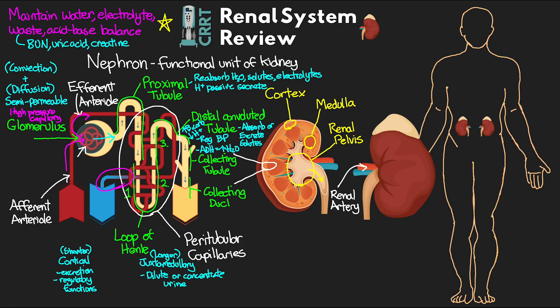The kidneys and their functional units, the nephrons, play a vital role in the homeostasis of our bodies. They regulate fluid balance by controlling how much water is reabsorbed, filter out waste, electrolytes, and solutes, and regulate acid-base balance through bicarbonate reabsorption and hydrogen ion secretion. When patients go into acute kidney injury and ultimately renal failure, this regulation becomes ineffective or non-existent. To support these patients, we need to recreate what's happening inside the nephron — and much of what we do with therapies is based on what the natural nephron does.